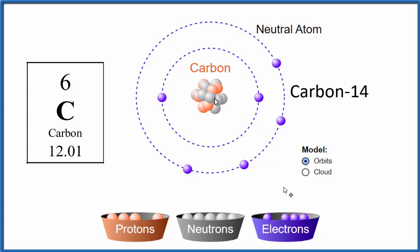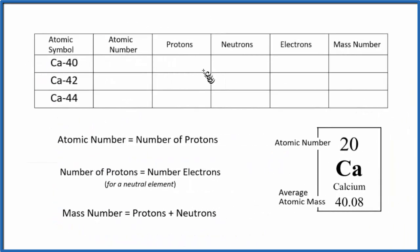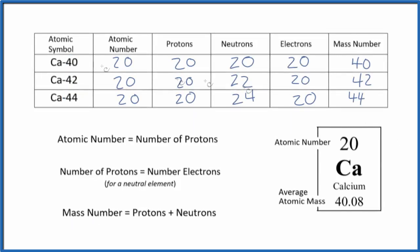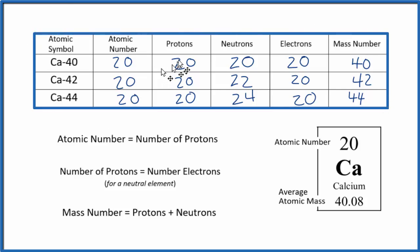So there are three main isotopes of carbon. You can't tell from the periodic table exactly how many isotopes there'll be, but because the average atomic mass is close to 12, most of them will be carbon-12 with 6 protons and 6 neutrons. Now pause and complete the table for the number of protons, neutrons, electrons, and mass number for calcium — these are the major isotopes of calcium. The mass number is indicated right in the name.